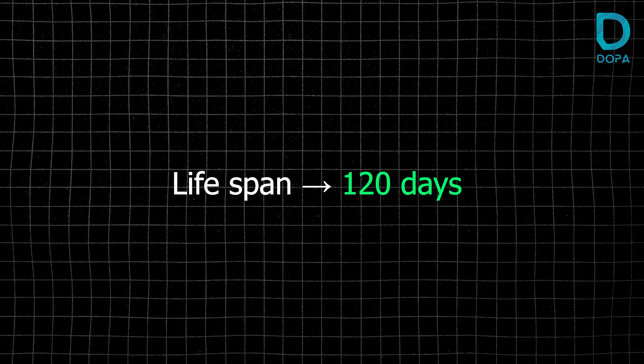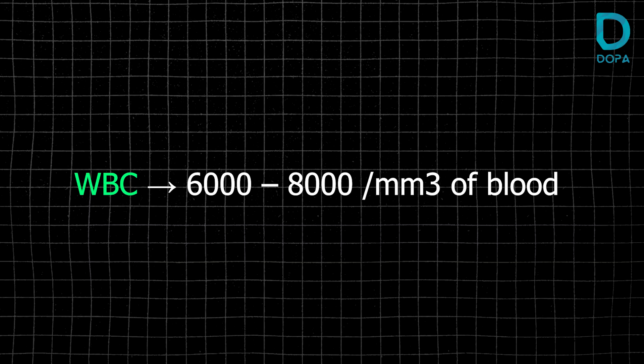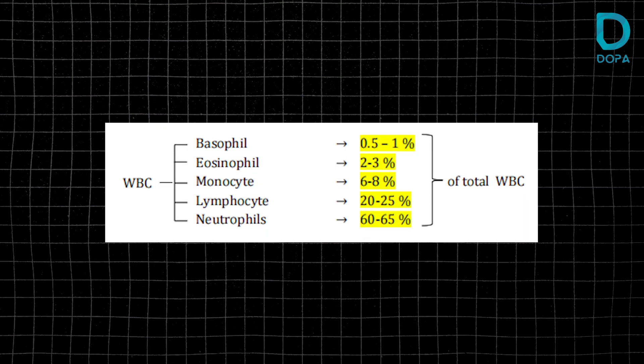In 1 cubic millimeter of blood, there are 6,000 to 8,000 WBCs. The types of WBCs are neutrophils, lymphocytes, monocytes, basophils, and eosinophils. Basophils make up 0.5 to 1%, eosinophils 2 to 3%, monocytes 6 to 8%, lymphocytes 20 to 25%, and neutrophils 60 to 65% of total WBCs.